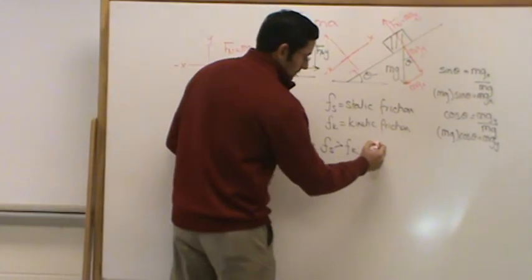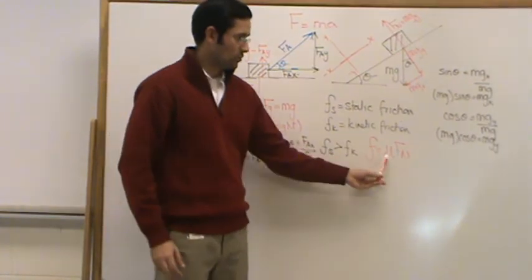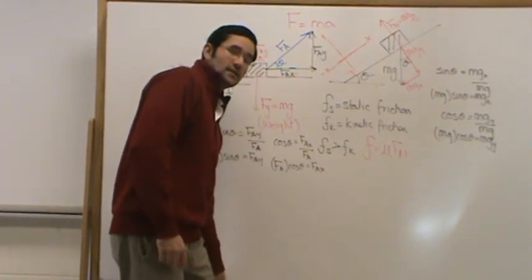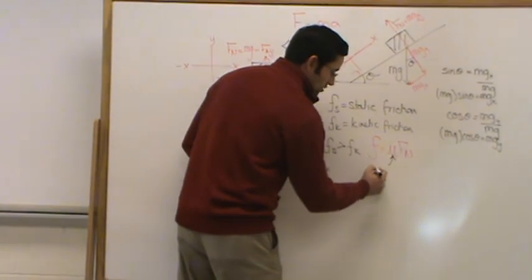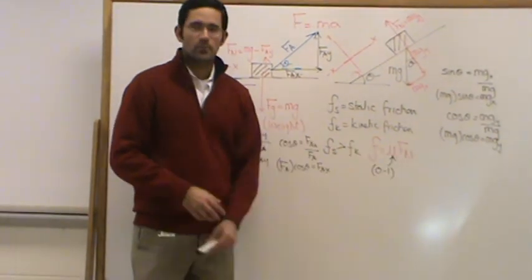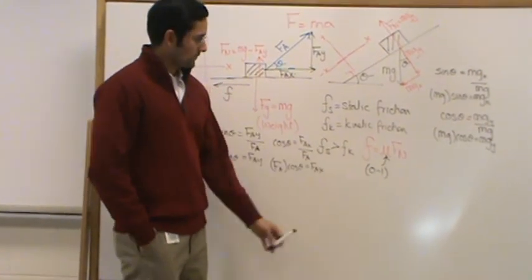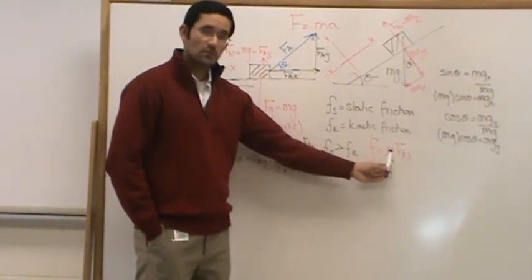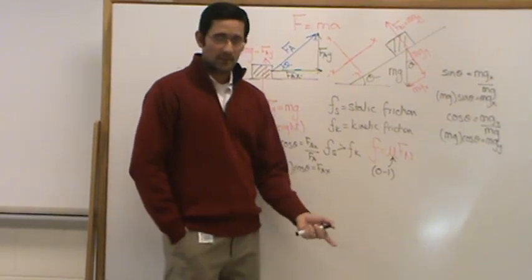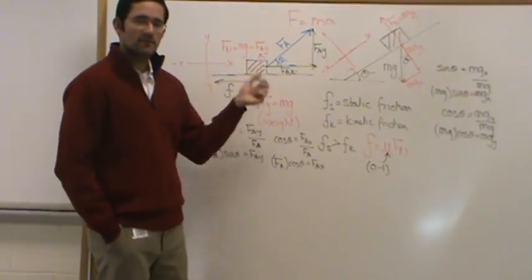Your normal force is very important because it's used to calculate the force of friction. The force of friction is calculated using two things: the coefficient of friction (mu, μ) and the normal force. Mu is a unitless number between 0 and 1 that tells you how rough or smooth the surface is. On sandpaper it might be 0.9; on ice it might be 0.1. The normal force tells you how hard the box presses against the surface — the greater the normal force, the greater the friction.